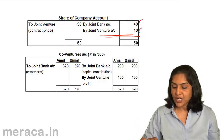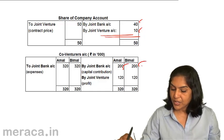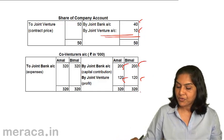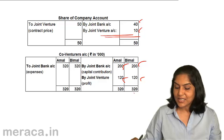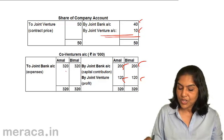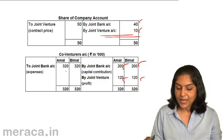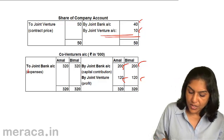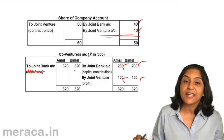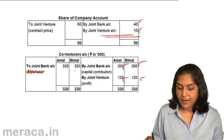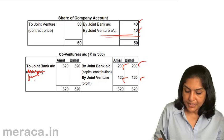Co-venturer's account: finally, 2 lakh and 2 lakh, share of profit 1 lakh 20, and therefore 3 lakh 20 is the balancing figure which, when taken to the joint bank account, represents the final settlement — not expenses, but the actual final payment to each co-venturer.